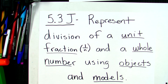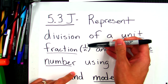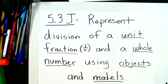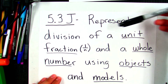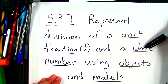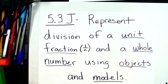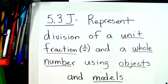In this lesson, we're going to be looking at 5.3j, which is to represent division of a unit fraction and a whole number using objects and models. A unit fraction is a fraction that has a 1 in the numerator and any number in the denominator — it can be 1 over 4, 1 over 6, 1 over 7, whatever. So we're going to be dividing a unit fraction by a whole number and a whole number by a unit fraction, going back and forth, using models.